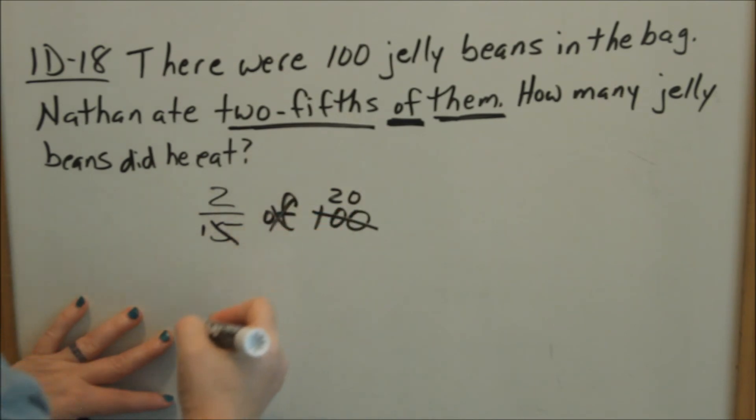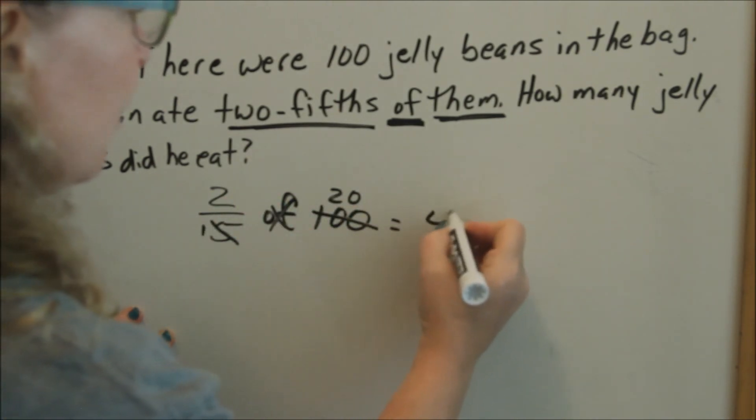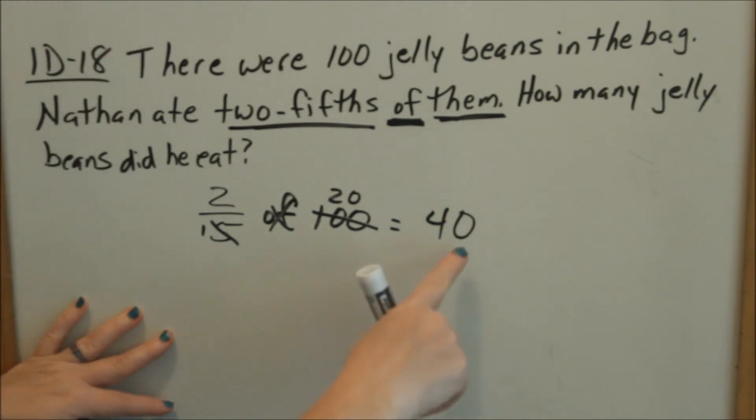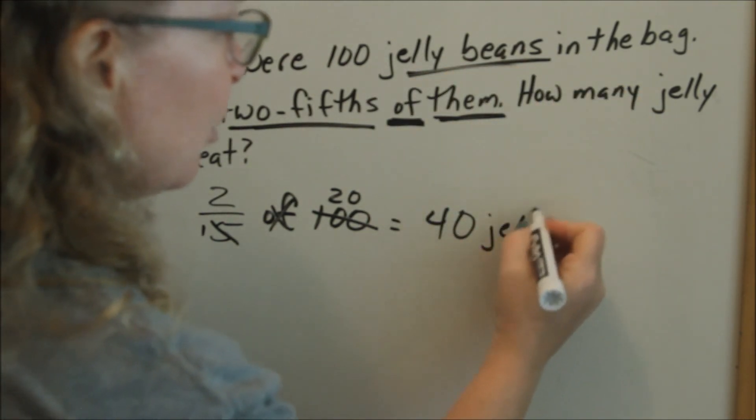Okay, now you multiply. Two times 20 and that equals 40. And then when you have a word problem, they'll just leave it as 40. What does 40 represent? 40 represents the number of jelly beans. So 40 jelly beans.